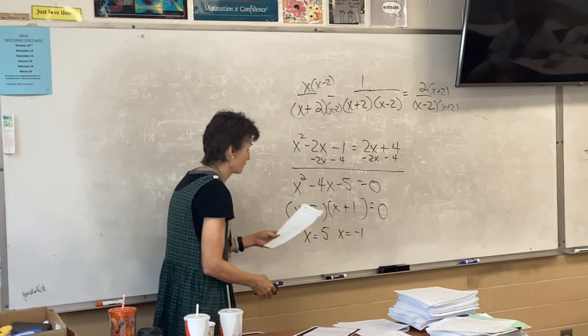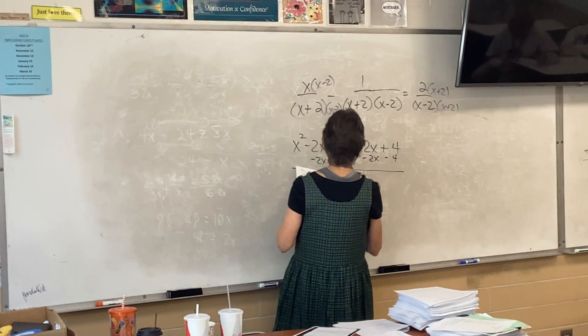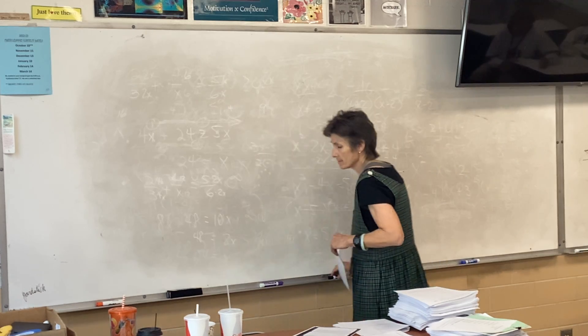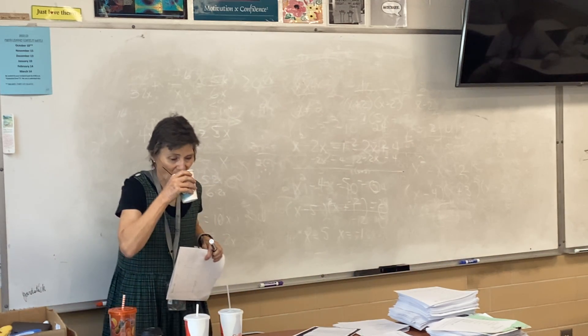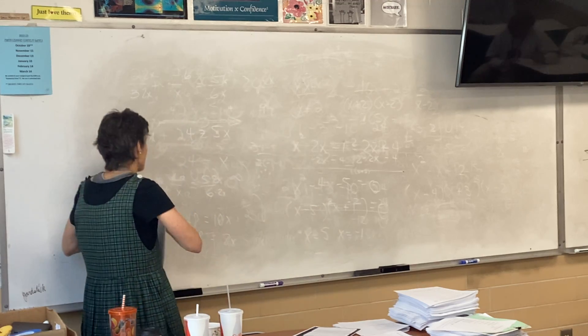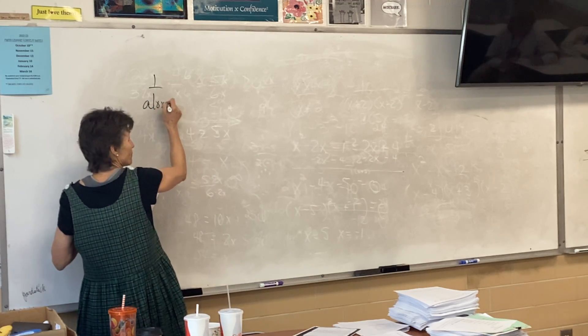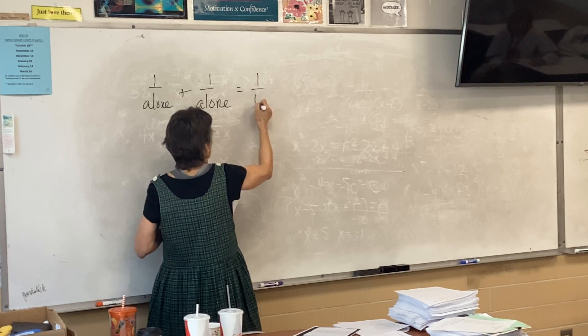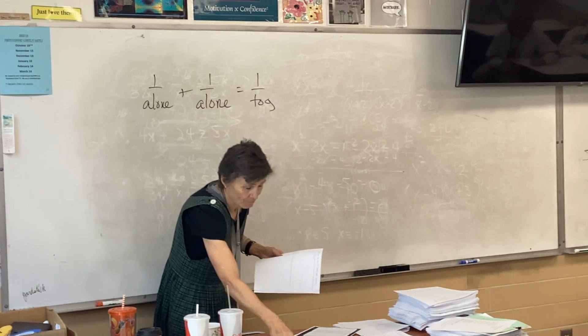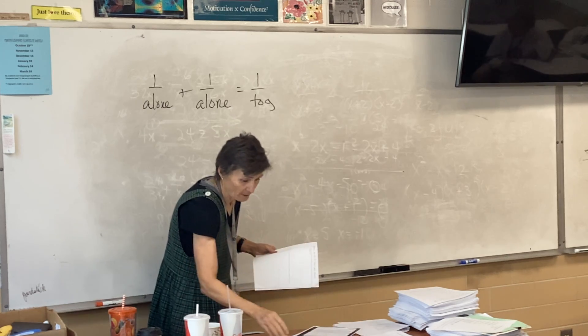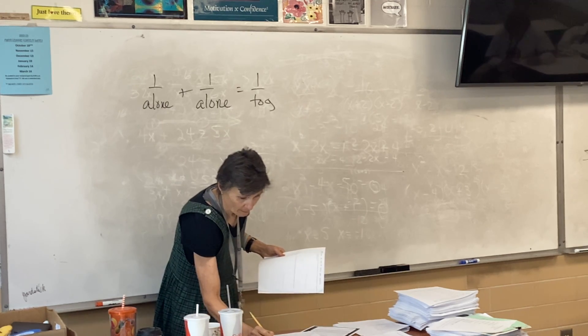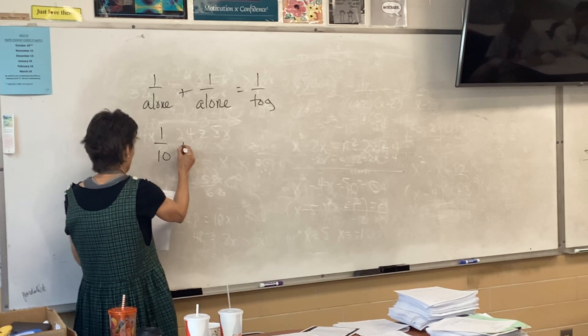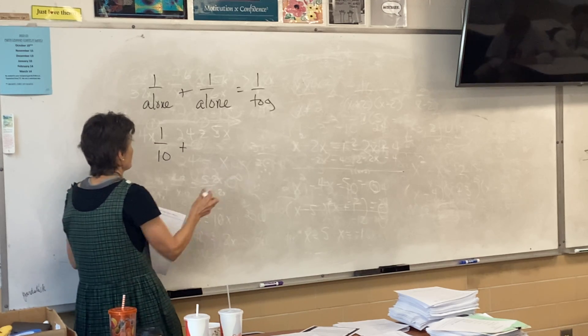Chandler can do the project in 10 hours. Mora helps, it takes 8 hours. How long does it take Mora alone? All right, so what's your strategy here? One over ten plus one over x equals one over eight. So one over alone plus one over alone.